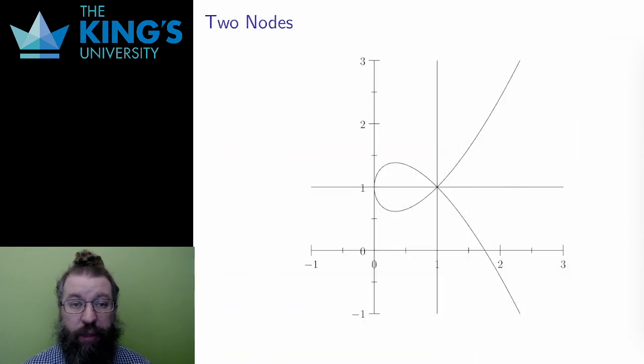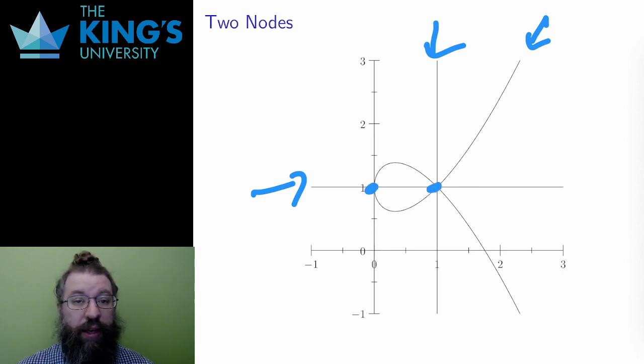Here is an algebraic plane curve with three components: a vertical line, a horizontal line, and a loop with unbounded tails. There are two nodes on this curve, at 0-1 and at 1-1.